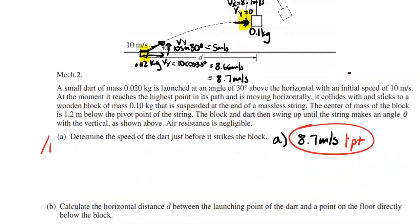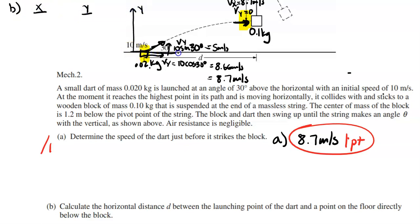For part B, we want the horizontal distance D between the launching point of the dart and a point on the floor directly below the block. Looking at the x and y directions — I'll say up and down is y, horizontal is x — we're looking between those two labeled points. Speed equals distance over time in x, and we'll use kinematics in y.